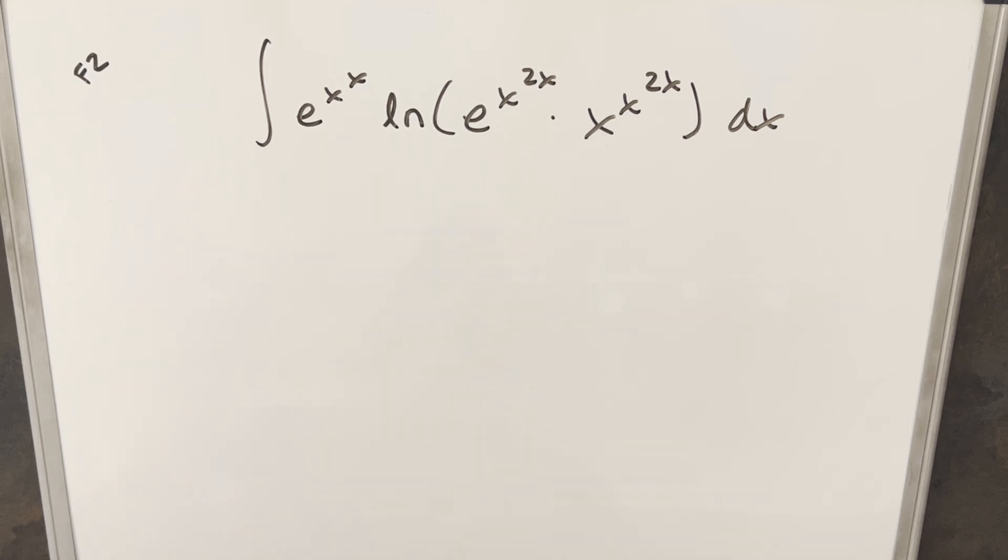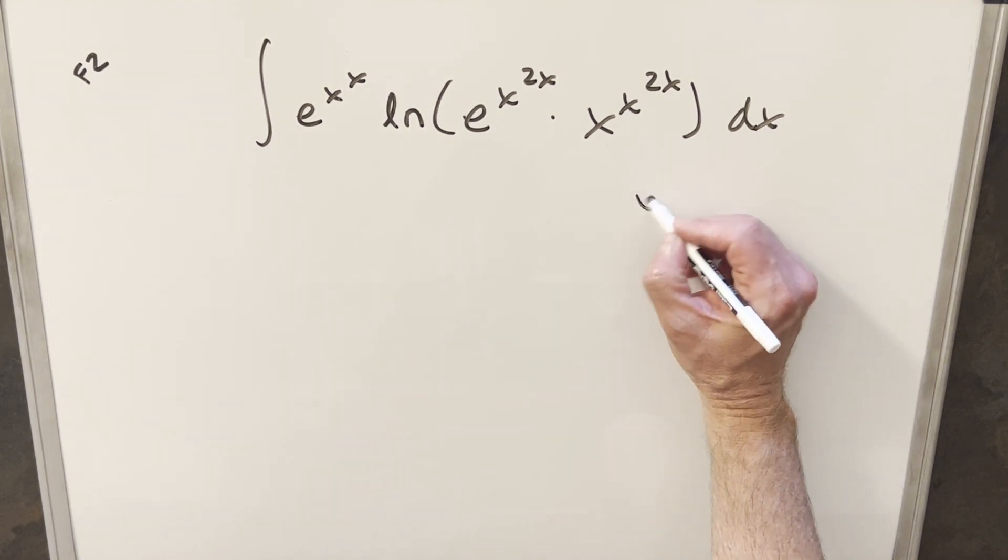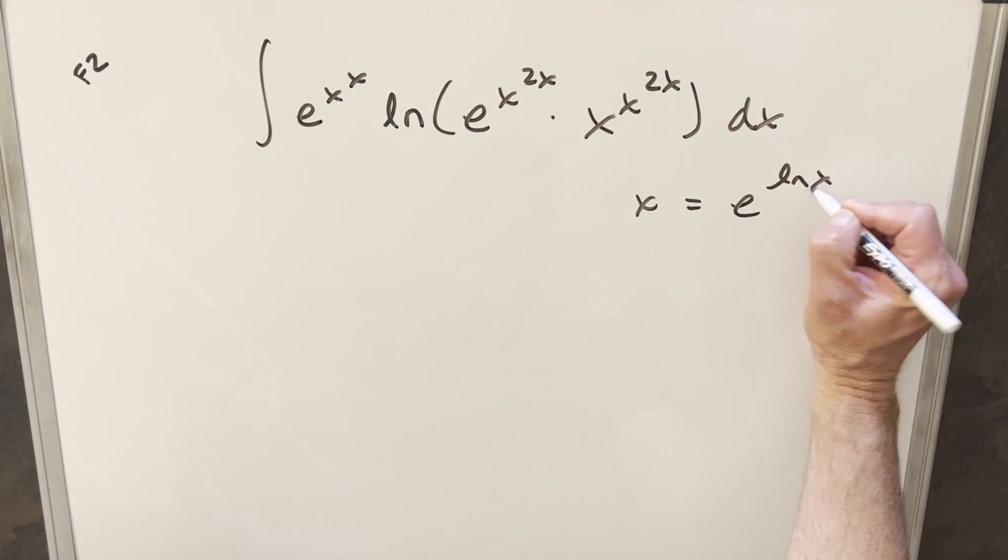Okay, to get started with this, the thing I noticed, in a lot of cases, I mean there's a lot going on here with the exponentials, but in some cases we don't have e as the base. We're okay here and here, but like here we've got x as a base. What we can do to transform some of these x's is, if we just have x, we can write it as e to the ln x.